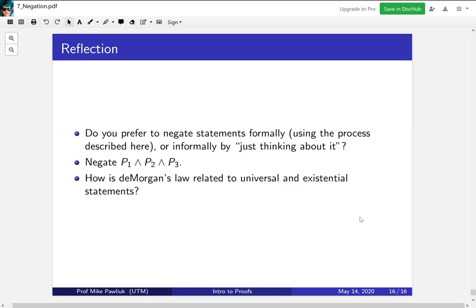Let's end with some reflection. Do you prefer to negate statements formally, using the process we described here, going one step at a time, or informally, by just thinking about it? Negate P1 and P2 and P3, where P1, P2, and P3 are just three mathematical statements. Once you've done this, answer the third question. How is DeMorgan's law related to universal and existential statements? Thank you very much, and have a good day.